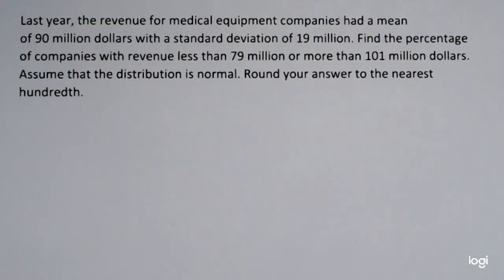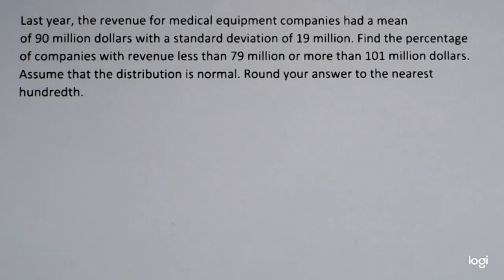This video is an example of how to find a percentage for a normal distribution where we have to convert to Z-scores first to use the standard normal table. I'll also do this one in the TI-84, and if you use the TI-84, you do not have to convert to Z-scores. So there is a little bit of an advantage using the calculator for this.